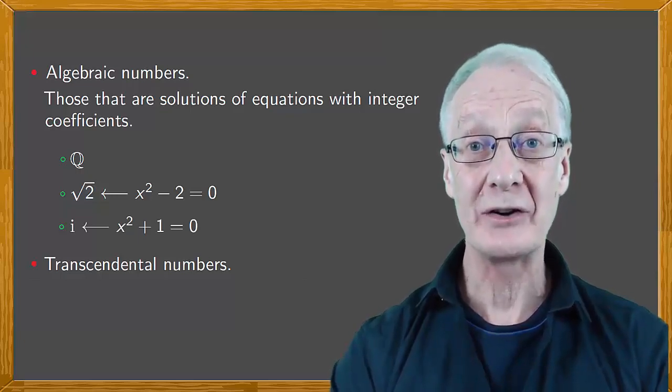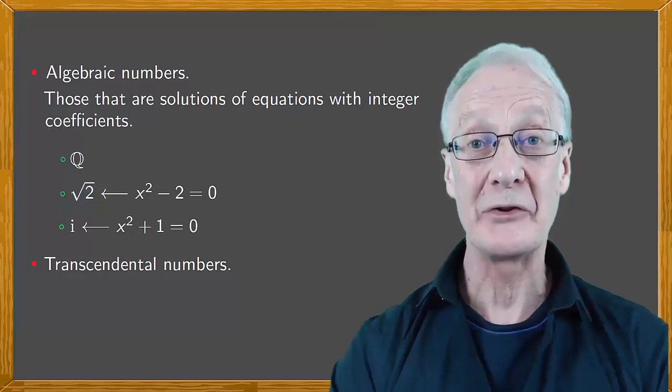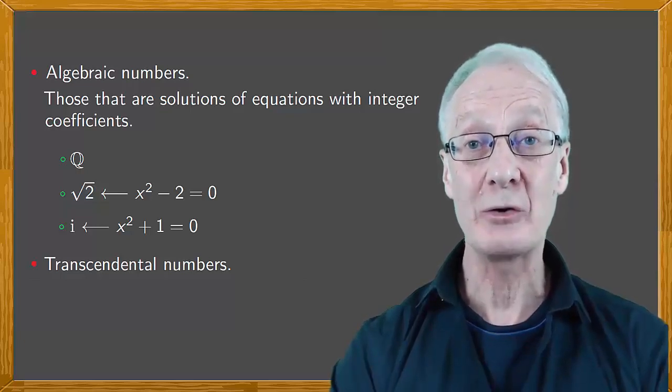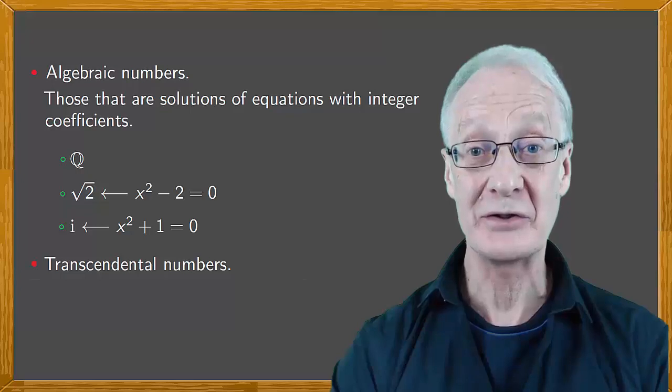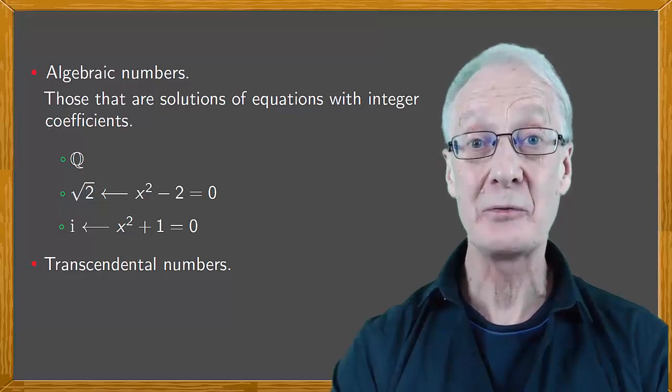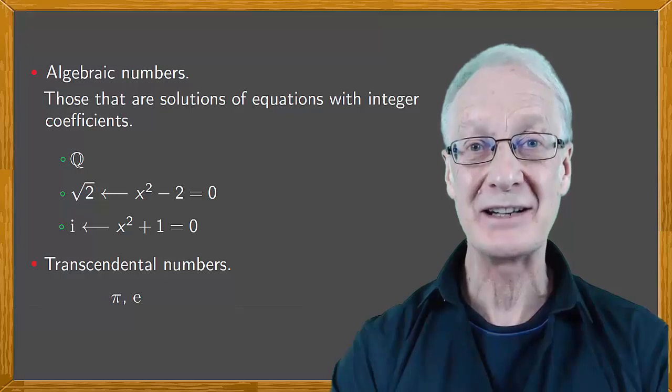Transcendental numbers are those that aren't algebraic. In other words, they aren't solutions to any equation with integer coefficients. It can be proved with a bit of effort that both pi and e are transcendental.